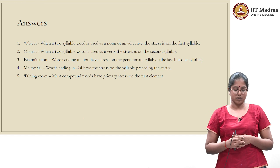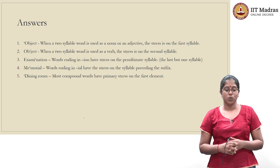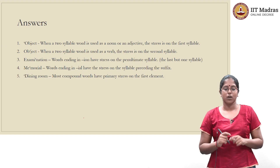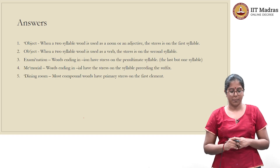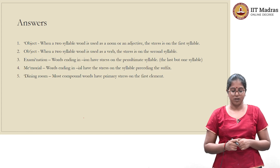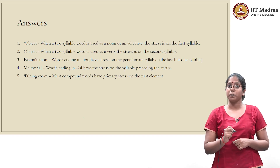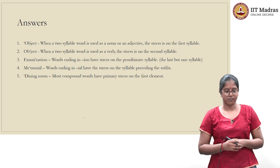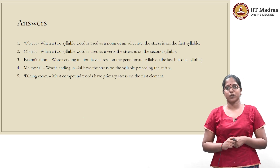The first word is object as a noun. The rule is: when a two-syllable word is used as a noun or adjective, the stress is always on the first syllable. This rule applies to at least 80% of words in that class. So in object, the stress comes on the first syllable — you pronounce it 'OBject'. For object as a verb, the second syllable gets stressed, so you pronounce it 'obJECT'.